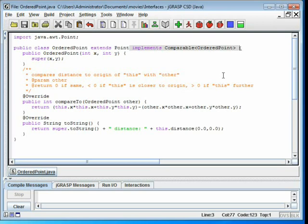The less than OrderedPoint greater than is present because Comparable is a generic class, and we have to specify that we will compare ordered points to other ordered points.